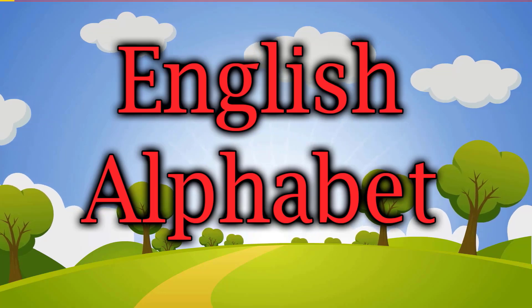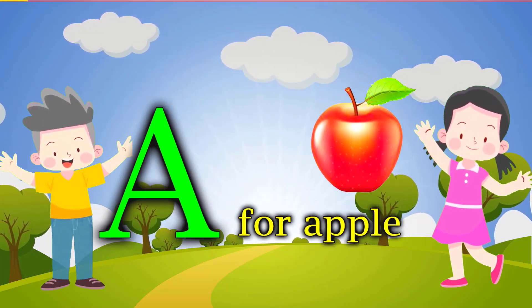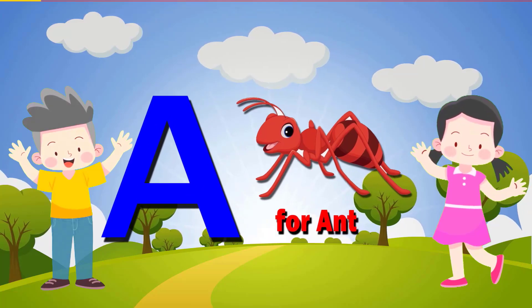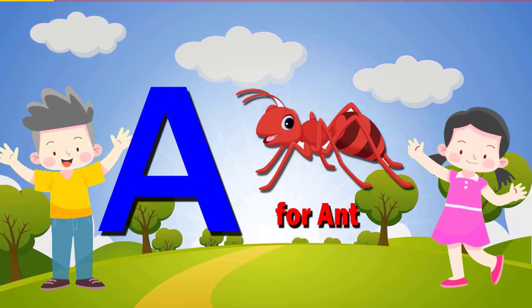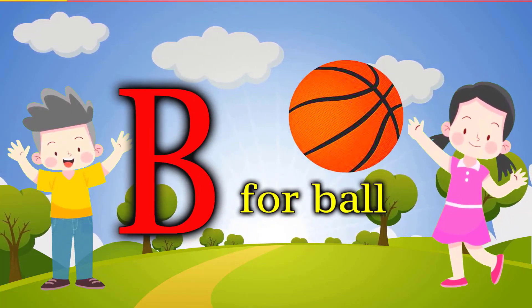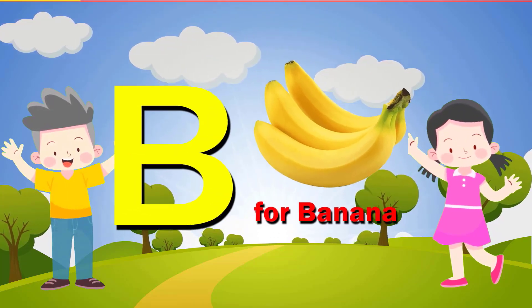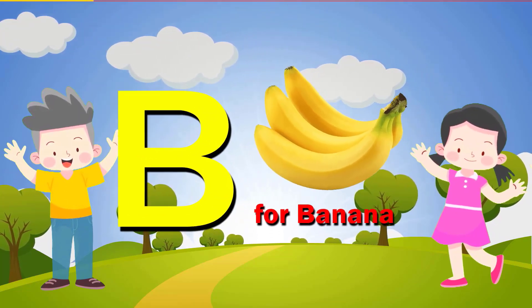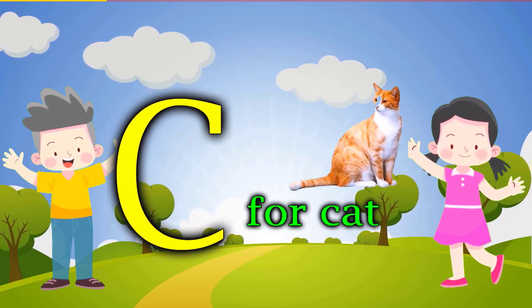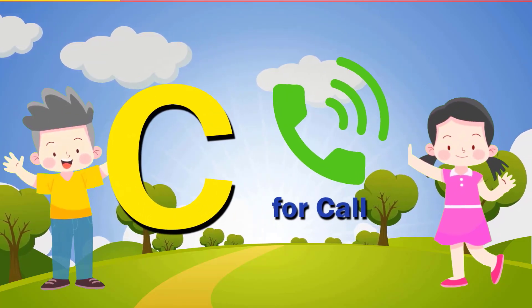English alphabet. A for apple, A for ant. B for ball, B for banana. C for cat, C for call.